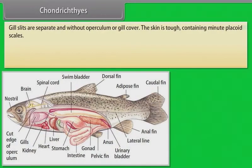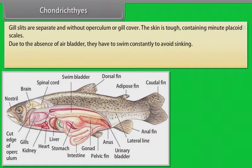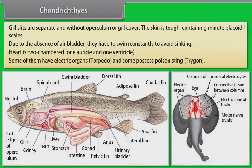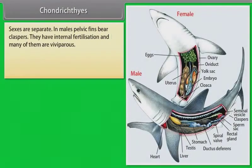Gill slits are separate and without operculum or gill cover. Their skin is tough, containing minute placoid scales. Due to the absence of air bladder, they have to swim constantly to avoid sinking. Heart is two-chambered — one auricle and one ventricle. Some of them have electric organs (torpedo) and some possess poison sting (trigon). Sexes are separate.